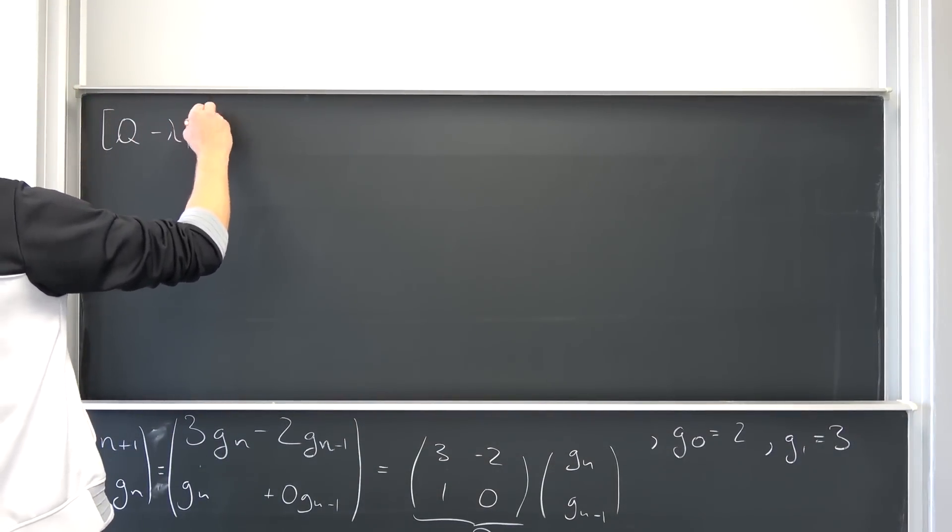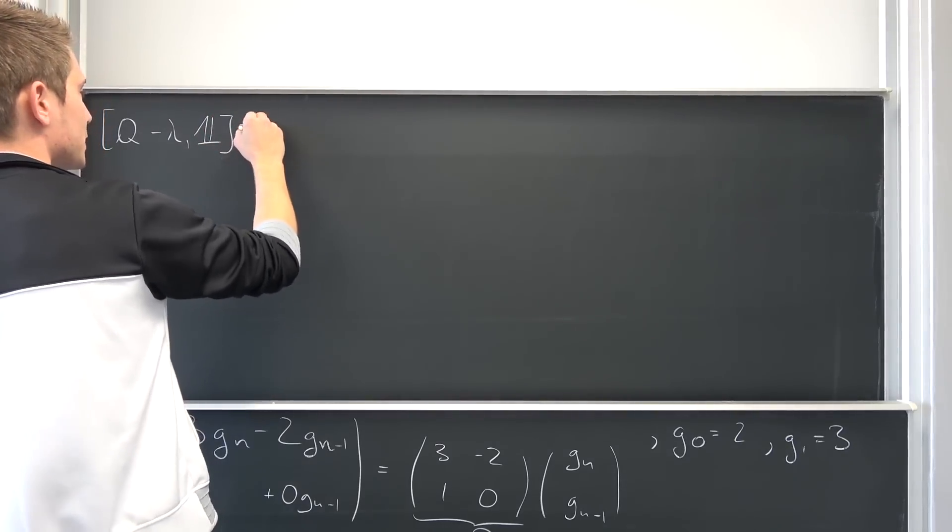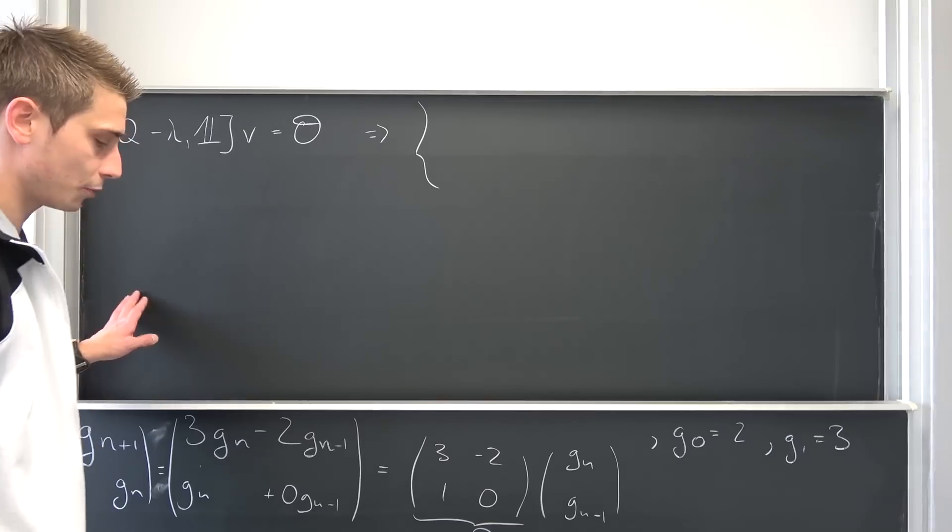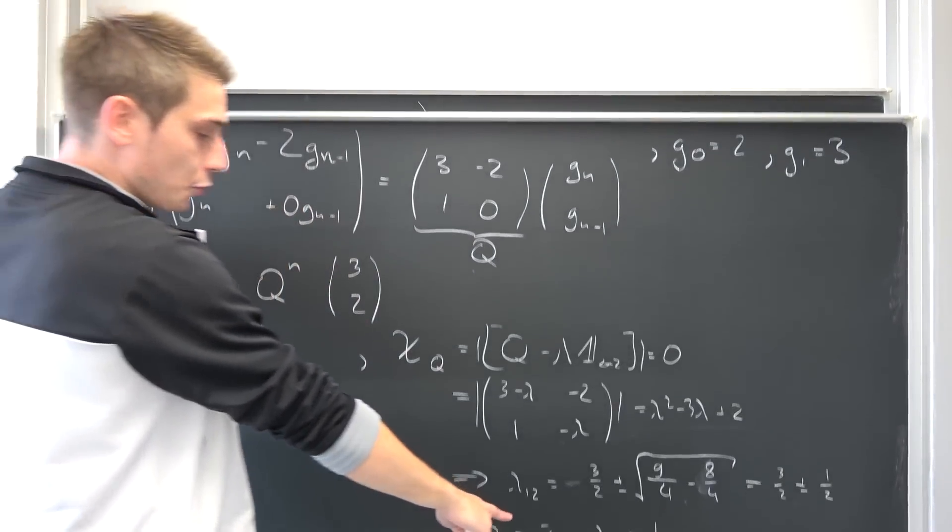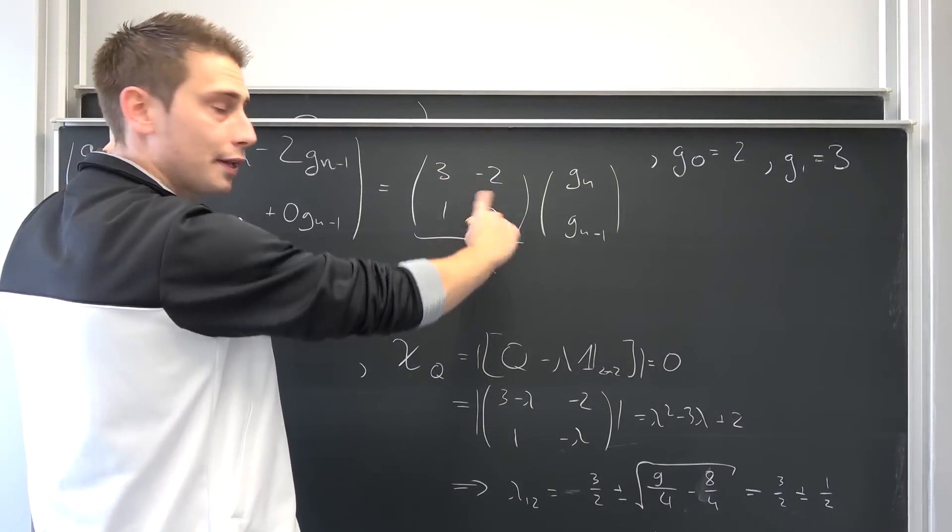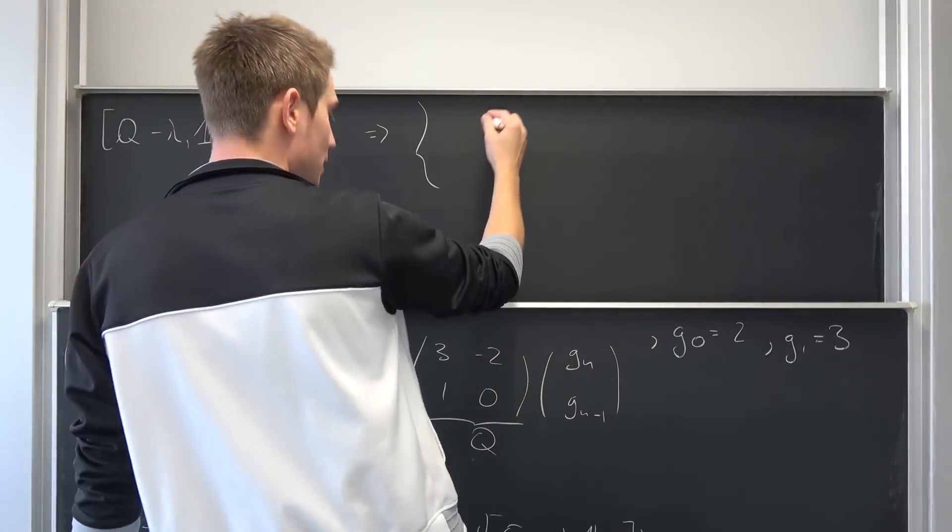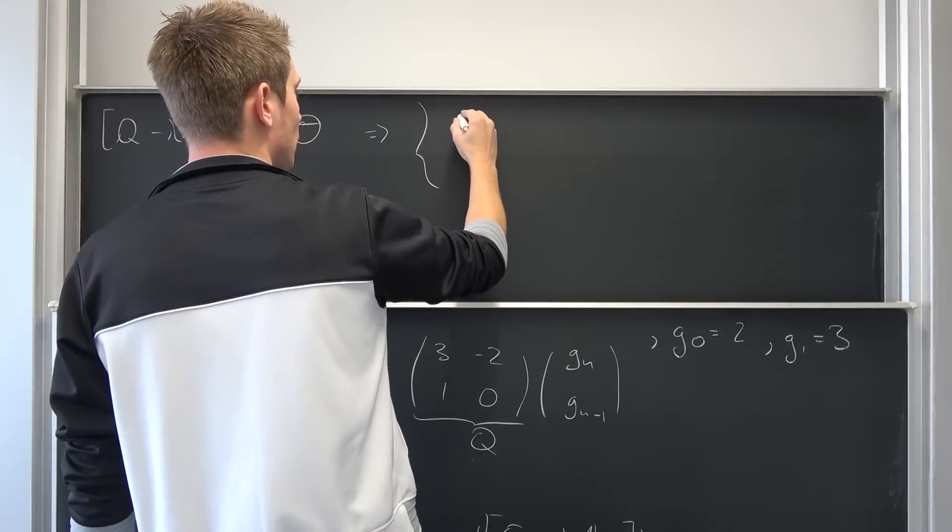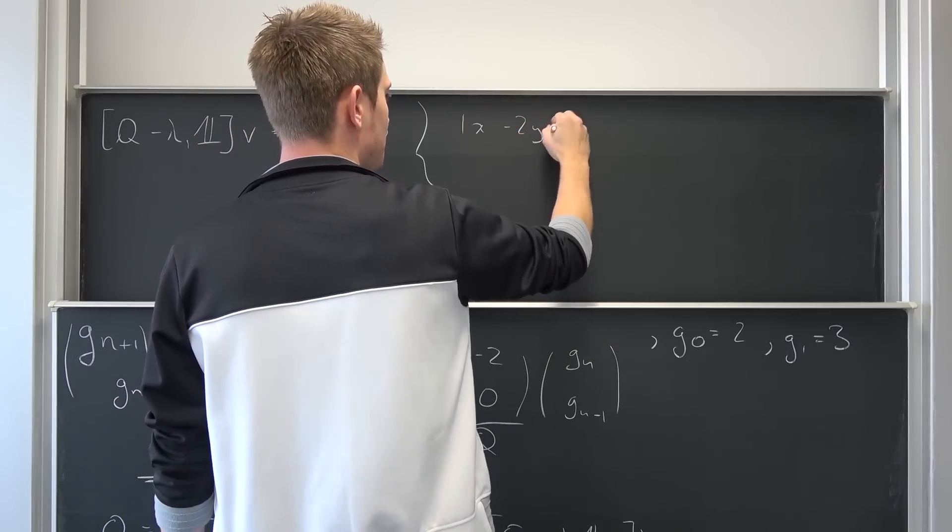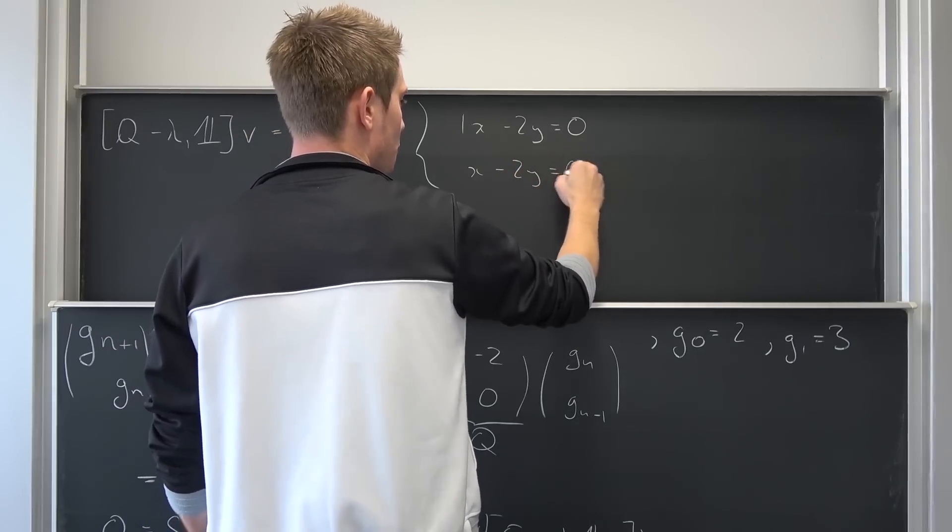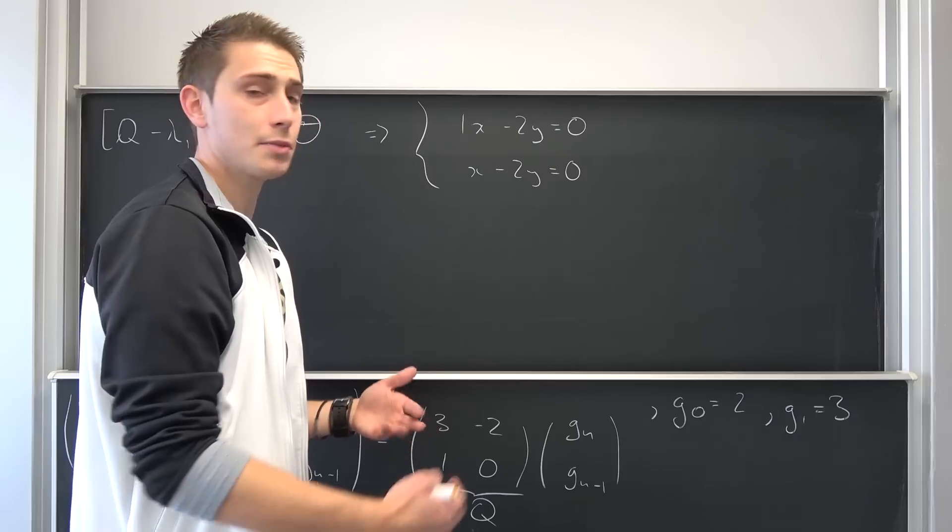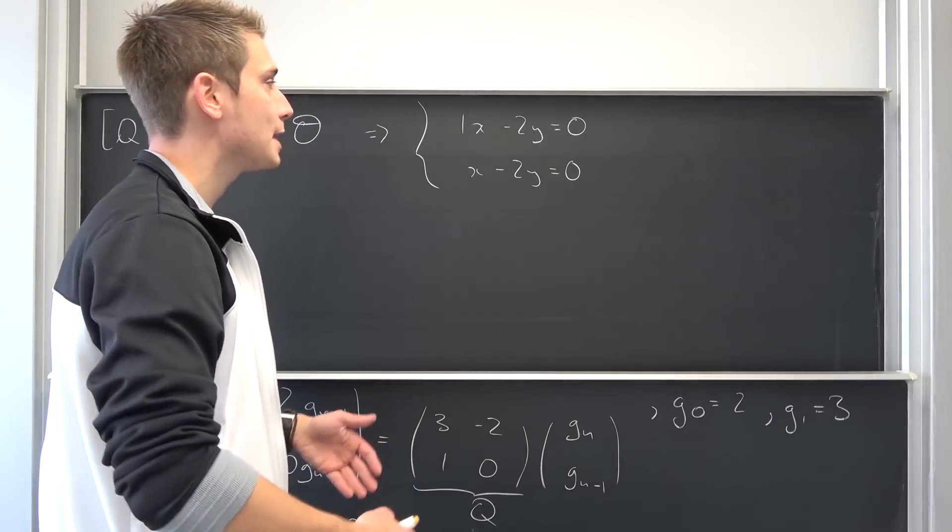Q minus lambda 1 times the identity matrix. This is our vector x and y, for example, being equal to the null vector. Meaning we are going to end up with a system of equations. Now 2 is our first eigenvalue. So this is going to result in 1, negative 2, 1 and negative 2 times the xy vector. They are both the same basically. So I'm going to put it in here. So 1x minus 2y is equal to 0 and we have x minus 2y is equal to 0.